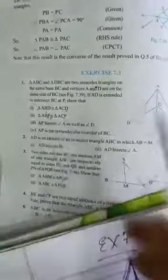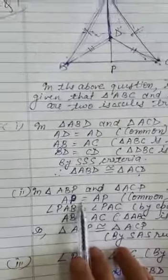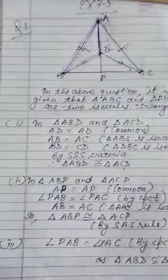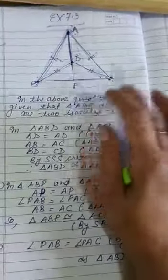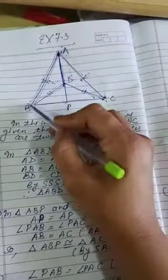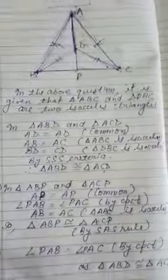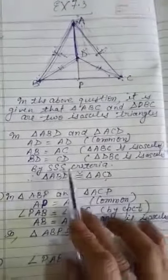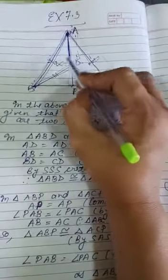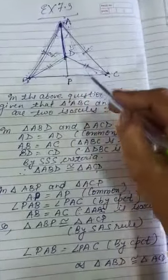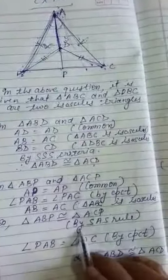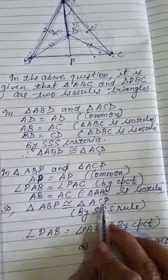In the second part, we have to prove that triangle ABP is congruent to triangle ACP. In triangle ABP and triangle ACP, side AP is common. Next, angle PAB equal to angle CAP by CPCT, because in the first part we proved that triangle ABD is congruent to triangle ACD, and therefore by CPCT these two angles are equal. And thirdly, AB equal to AC as triangle ABC is an isosceles triangle. So by SAS rule, triangle ABP is congruent to triangle ACP.